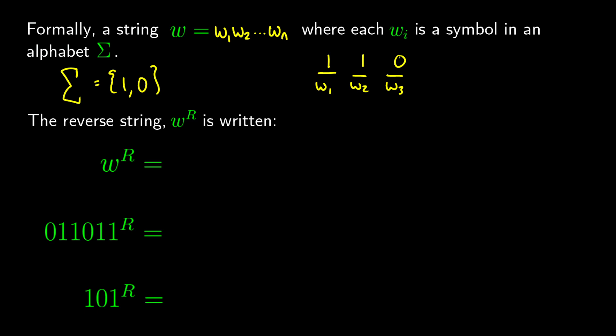One thing we can do with strings is reverse them. Because there's an order 1 through n, the reverse starts with wₙ, then wₙ₋₁, all the way down to w₂ and w₁. So for the example 1, 1, 0 — where we labeled w₁, w₂, w₃ — the reverse reads w₃, w₂, w₁, giving us the string 0, 1, 1.